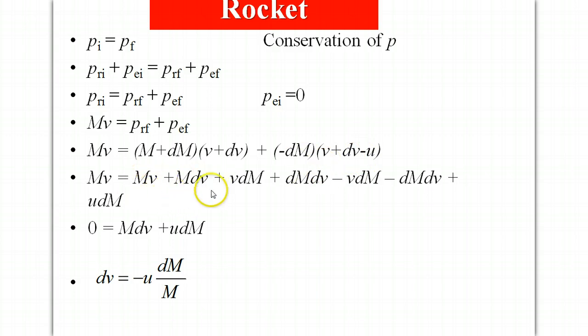And then what I do in this equation here is just multiply everything out and so we get something pretty messy looking, but what we can see is that here we have Mv big Mv in both sides those are going to cancel, here we have a plus vdM here we have a minus vdM those will cancel.